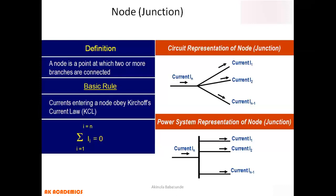The basic rule for node analysis obeys Kirchhoff's Current Law, which simply means the summation of all the currents around a particular node must be equal to zero. This can also be interpreted as saying that the current entering a node must be equal to the current leaving the node.